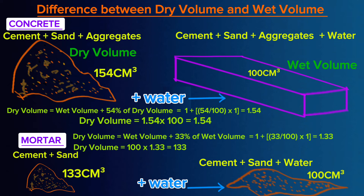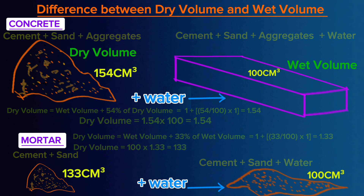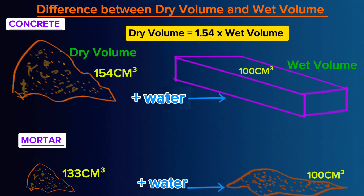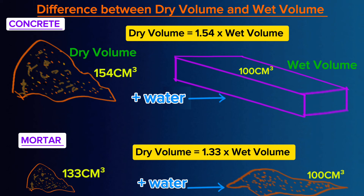In summary, when water is added to a concrete mixture of sand, cement and aggregates, the volume reduces by 54%, whereas when you add water to a dry mix of cement and sand, the volume reduces by 33%. When you want to convert wet volume concrete into dry volume, simply multiply wet volume by 1.54 — 1.54 is a constant. Similarly, when you want to convert wet volume mortar into dry volume, simply multiply wet volume mortar by 1.33 to get the dry volume mortar. Use 1.33 as a constant.